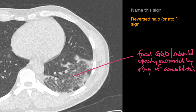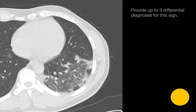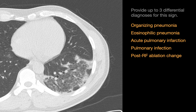When we see a reversed halo or atoll sign, what's your differential diagnosis? The classic differential diagnosis is usually organizing pneumonia, relative eosinophilic pneumonia, and acute pulmonary infarcts. Lung infections can sometimes manifest like this, and the other thing to think about is the lung changes we would see after an RF ablation has been performed.